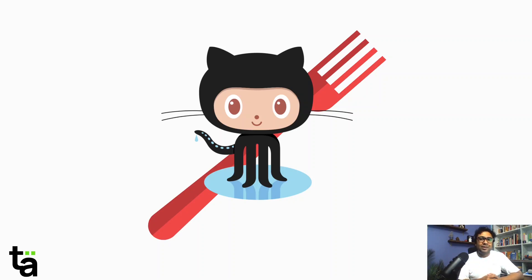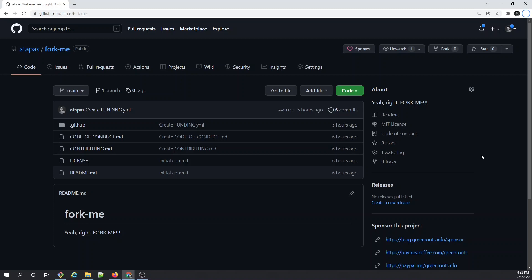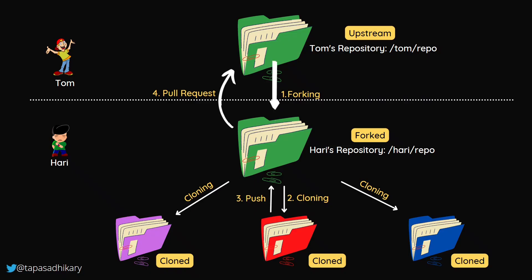When you visit a public Git repository, you get to see the Fork option. You click on it to start forking the repository. But before we do that, let's understand what exactly forking is and why we should use it. A picture is worth a thousand words, so let's understand it like a story. We have two characters: Tom and Harry. They both have GitHub accounts.